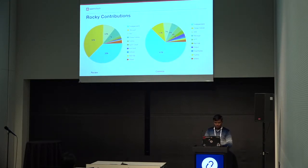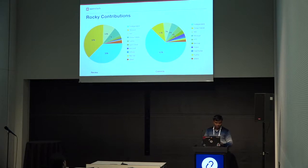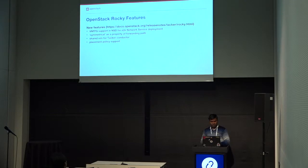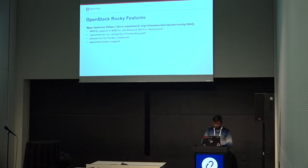This is the Rocky contribution from the Taker team. We ranked 37th in reviews as per Stackalytics, and ranked 53rd in commits. There are more than 75 filed bugs, and we resolved around 52 of them. The key contributions for this Rocky cycle are: VNFG support in NST for end-to-end network service deployment, symmetrical as a property of forwarding path, shared VIM for Taker conductor, and placement policy support.